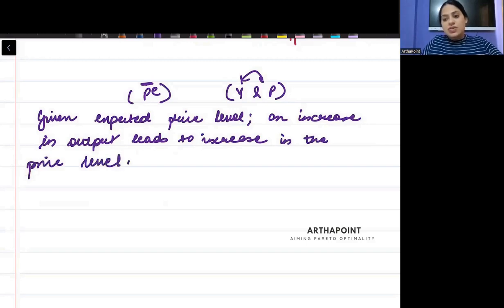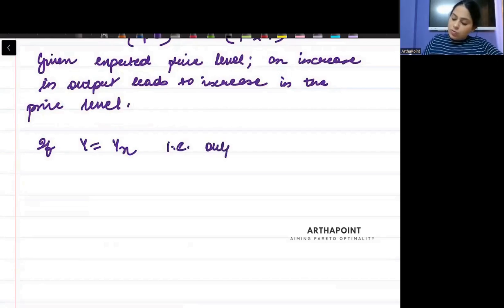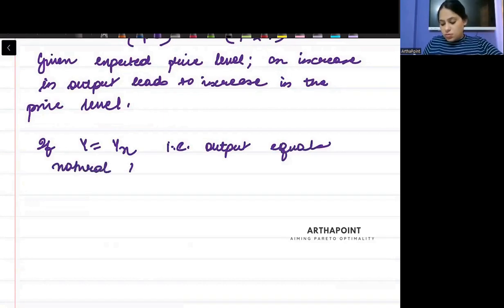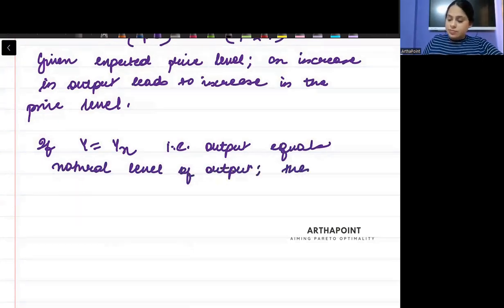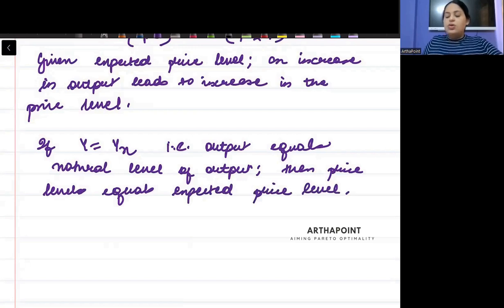Is this clear? Please write it down further. If Y is equal to YN, that is output equals natural level of output, then price level equals expected price level. So when Y is equal to YN, P is equal to PE. Clear?